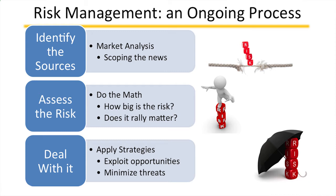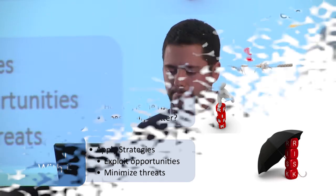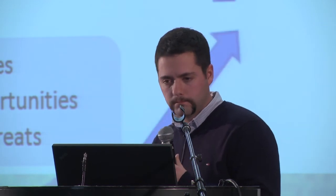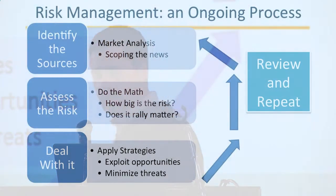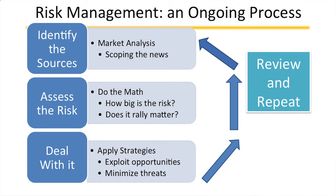Then we get to the point where we look at strategy — how do we deal with this, how do we apply the strategy? Is there an opportunity we can exploit, or something we need to put in place to minimize a threat? And just like the shampoo bottle, something we need to do is repeat. We review and repeat this process as we're fed new information, following market outlooks with Ann. Things change week to week, day to day, and making sure we incorporate that new information helps us make better and better decisions going forward.